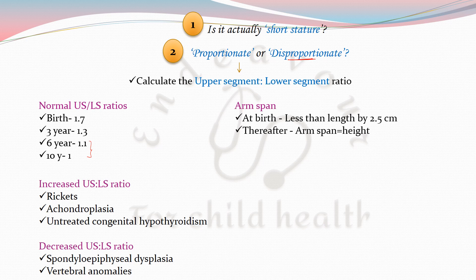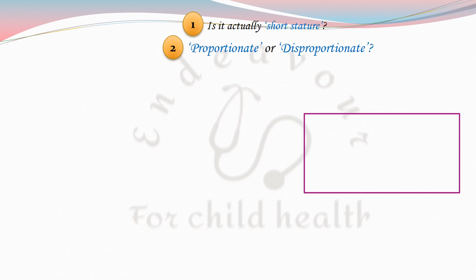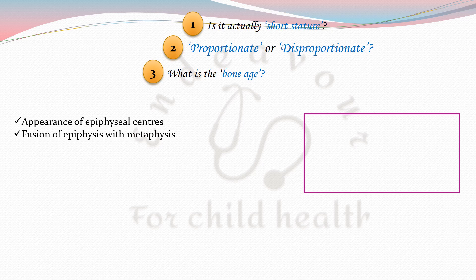A relationship between arm span and height can also be assessed. Arm span is the distance between the tips of the middle fingers with arms outstretched sideways. At birth, arm span is slightly less than the length of the baby by 2.5 centimetres, and thereafter the arm span is almost equal to height, unless it is a genetic or syndromic condition.